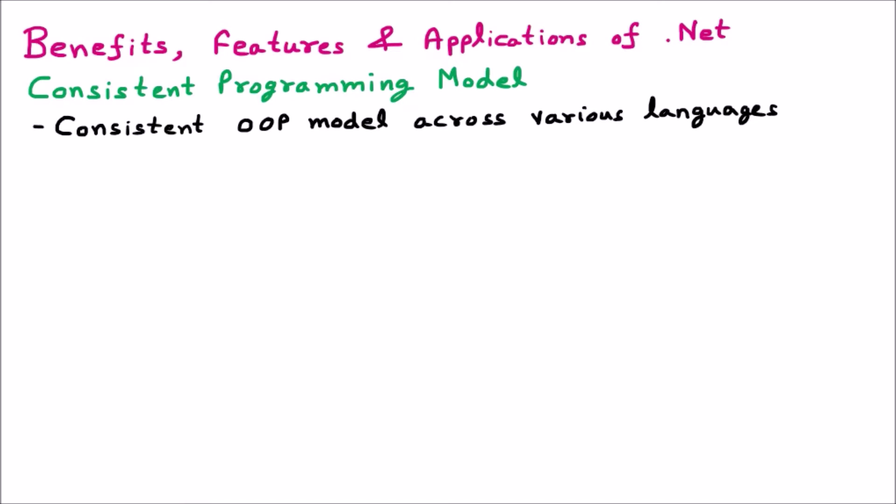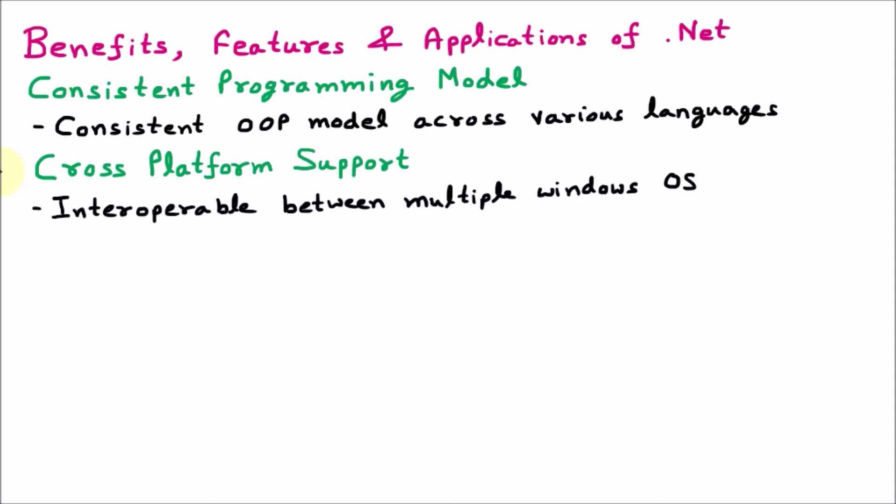The next feature of .NET is cross-platform support. As the name signifies, it works on multiple platforms. Whenever we make a .NET project, we mostly use Windows — Windows 11, Windows 10, or Windows 8. If you develop an application on Windows 11, it will also work on Windows 10 and earlier versions. So it is interoperable between multiple Windows operating system versions.